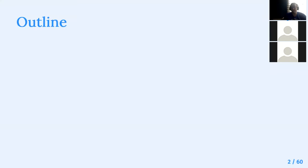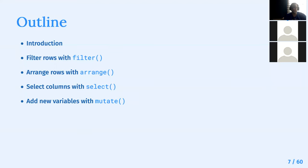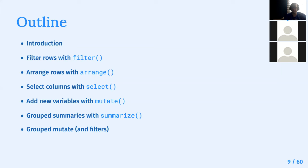The outline of the chapter is as follows. We'll go through a little introduction, talk about the filter function, the arrange function, the select function, mutate, summarize, and then end with group mutate.